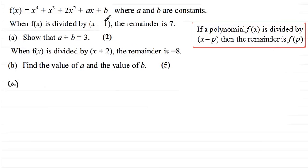So for this example, p would be 1. So that would mean that f(1) must equal the remainder, which is 7. So we just need to substitute x equals 1 into f(x) and equate it to 7, and we should find we get a plus b equals 3. We'll do that now.